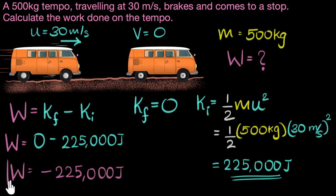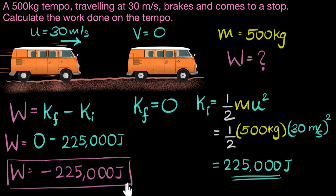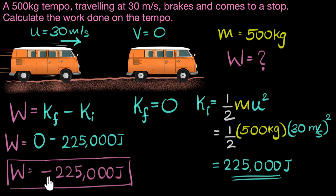That gives us minus 225,000 joules. The minus sign is important — the work done on this tempo is a negative number. This negative sign is saying that kinetic energy was removed, not added. Since the kinetic energy was removed, the work done is negative. When velocities are given, work done can be calculated directly by using the work-energy theorem.